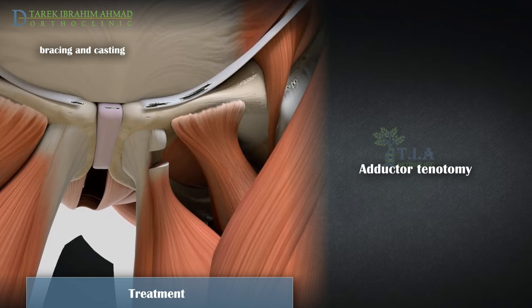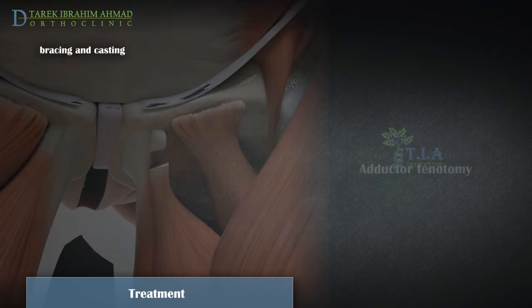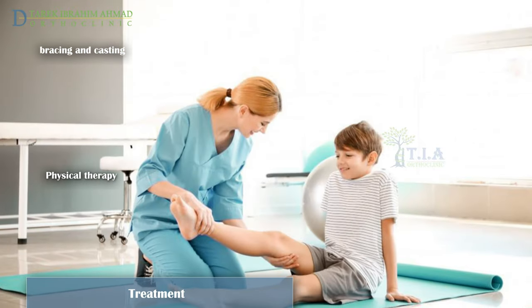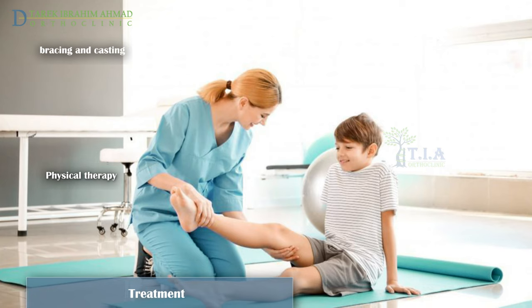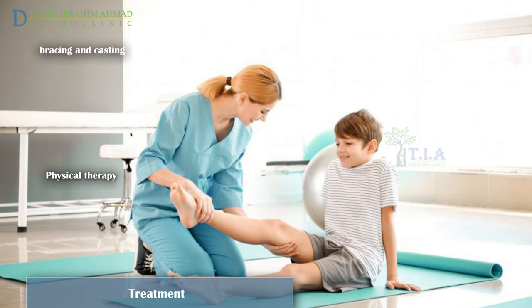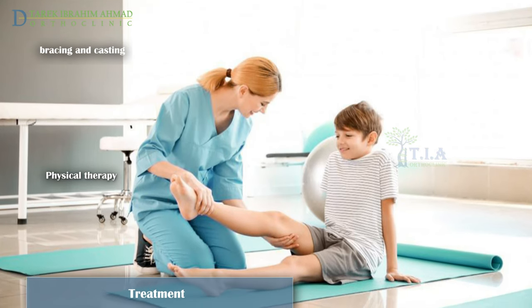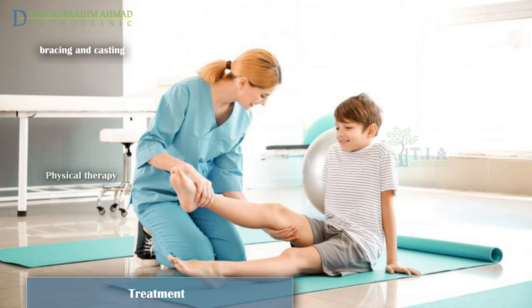To address this tightness, the doctor will perform a minor procedure called a tenotomy before applying the Petri casts. During this quick procedure, the surgeon makes a tiny incision in the groin and severs the adductor tendon. The tendon grows back within a few months, allowing the child to move his or her hip more normally. After the cast is removed — usually after four to six weeks — physical therapy exercises are resumed to restore motion in the hips and knees.